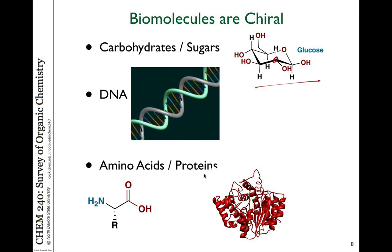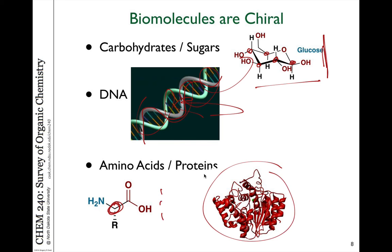For example, in the glucose molecule, there are five carbons that each have four different groups attached — it's not symmetric, and its mirror image is different. Living systems use one specific mirror image isomer of glucose in their processes. DNA is also handed because the backbone has chiral molecules — the sugars that link the base pairs together are chiral. Amino acids also have stereogenic carbons, and in biological and biochemical processes, proteins typically use only one enantiomer of each amino acid.